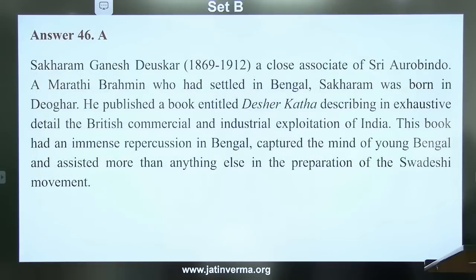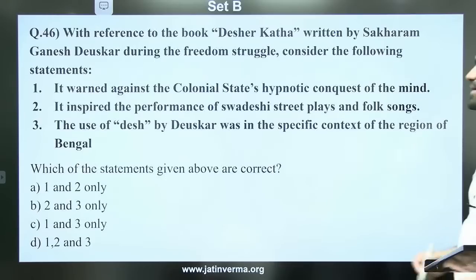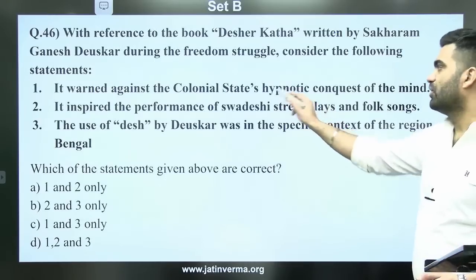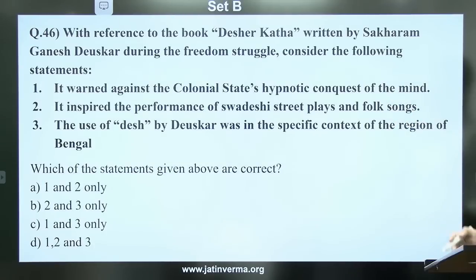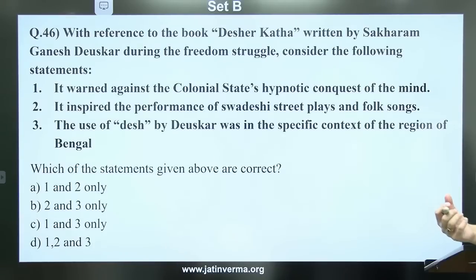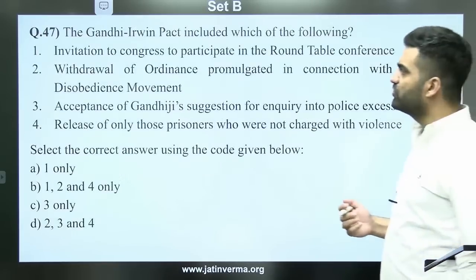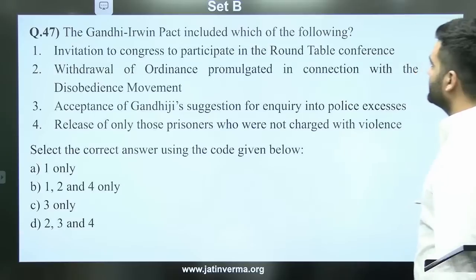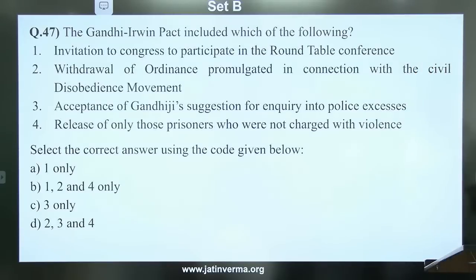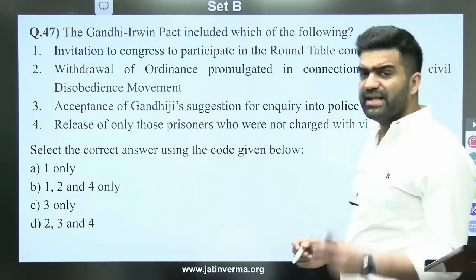The answer is A — the book warned about the colonial state's hypnotic conquest of the mind. Question 47: Gandhi-Irwin Pact included which of the following? This question was asked in the daily news analysis group on the night of 30th September and 1st October.